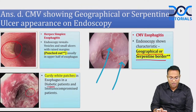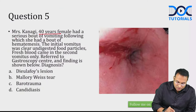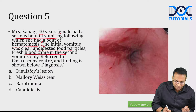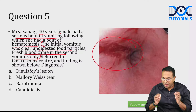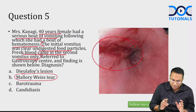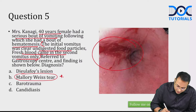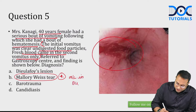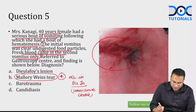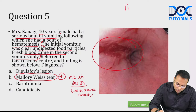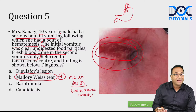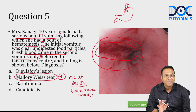Mrs. Kannagi, 40 years, had a serious bout of vomiting followed by hematemesis — initial food particles came out, then fresh blood in the second vomiting. Endoscopy shows a classical finding of Mallory-Weiss tear, seen at the esophagogastric junction in the lesser curve near the proximal cardia. The second common site is the esophagus itself. It is self-limiting — bleeding will stop automatically.